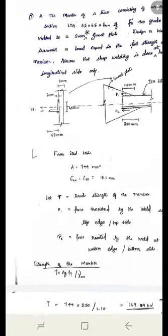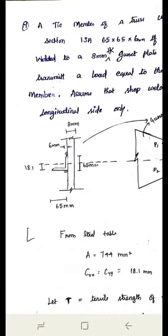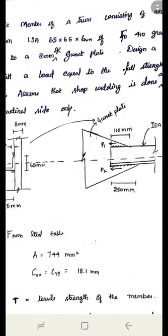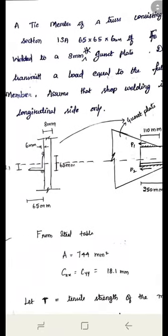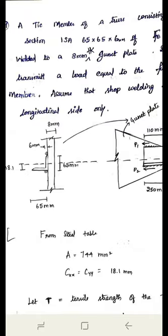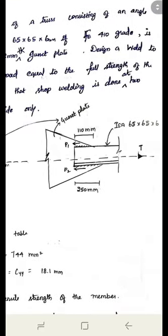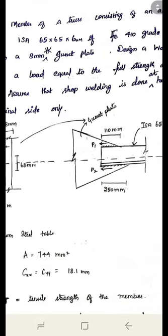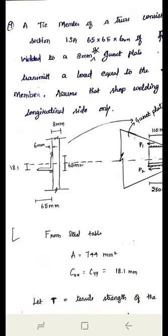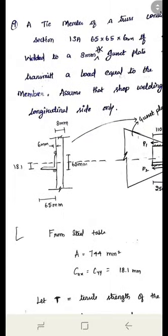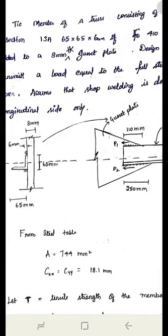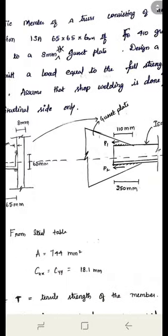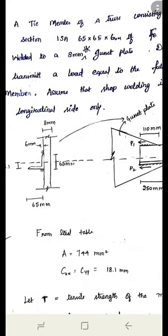Let me solve the next problem in the fillet welded joint. First we will read the problem. A tie member of a truss consisting of an angle section ISA 65 by 65 by 6 mm of FE 410 grade is welded to an 8 mm thick gusset plate. Design a weld to transmit a load equal to full strength of the member. Assume the shop welding is done at two longitudinal sides only.